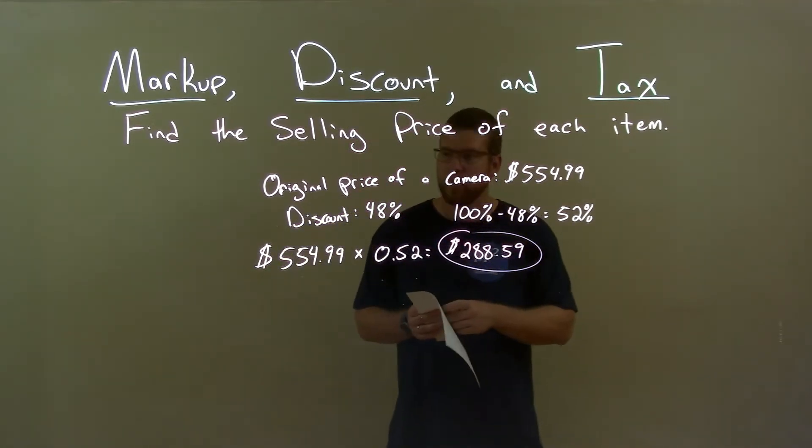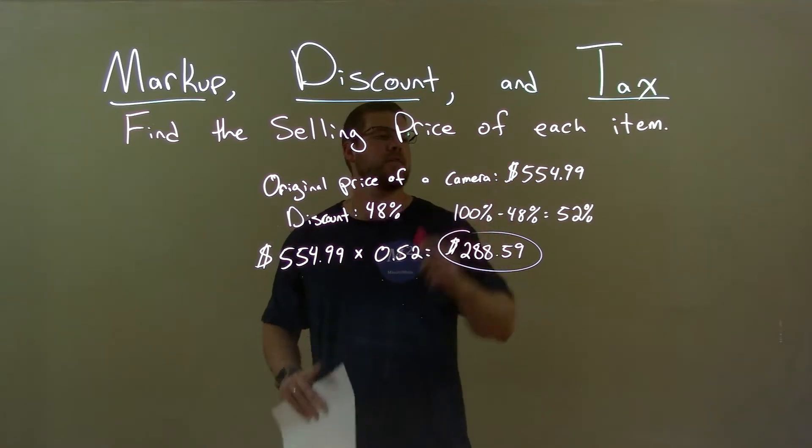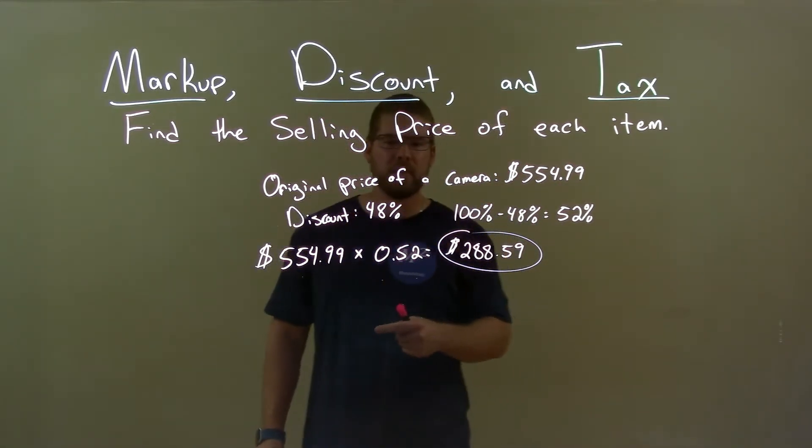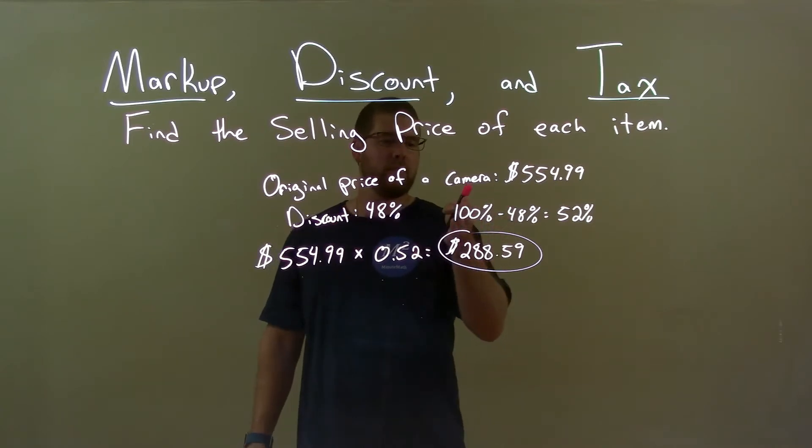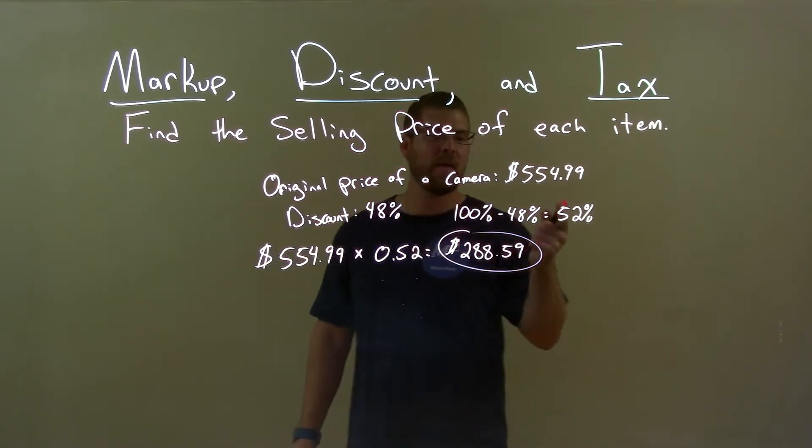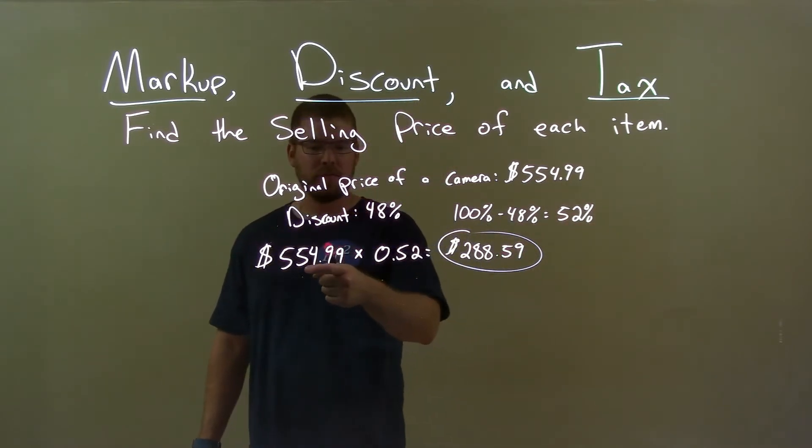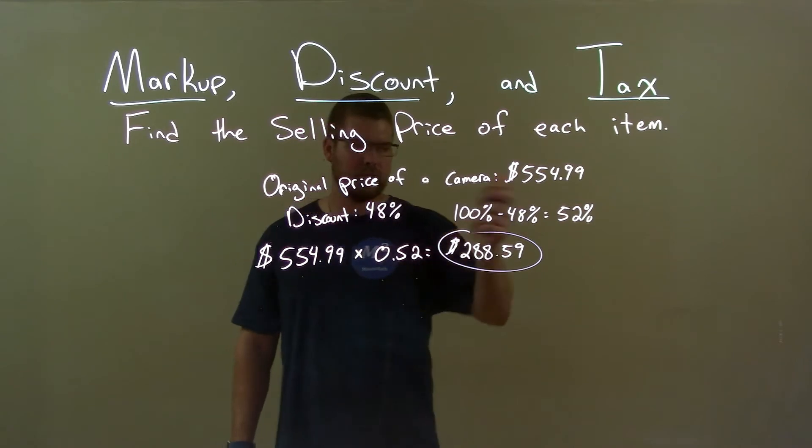Quick recap. We're given the original price of the camera is $554.99, and we're given a discount of 48%. Well, we found out that 100 minus 48 is 52%, and that's how much of the original price we will pay. So, we take the original price, $554.99, times 0.52, 52% as a decimal, and get our final answer of $288.59.